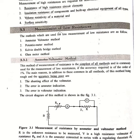The first method is the ammeter-voltmeter method, then the potentiometer method. Third is the Kelvin double bridge method, and the last one is the ohmmeter method. All these four methods are used for the measurement of low resistance. We will study the ammeter-voltmeter method in this lecture.